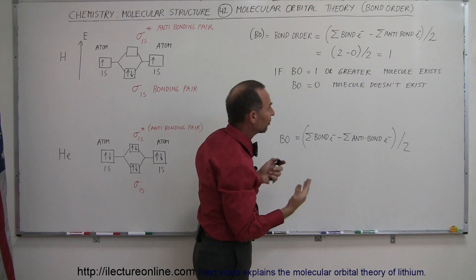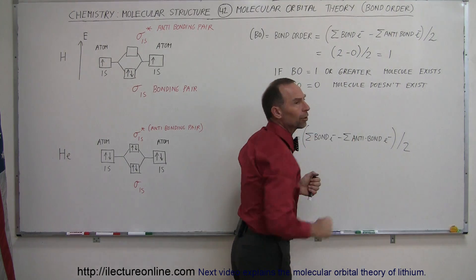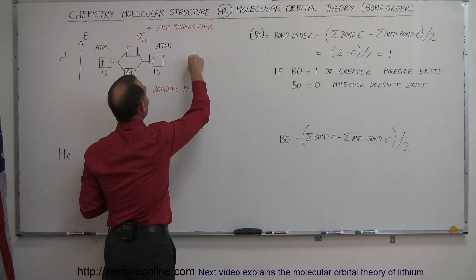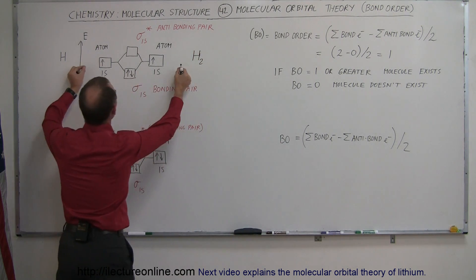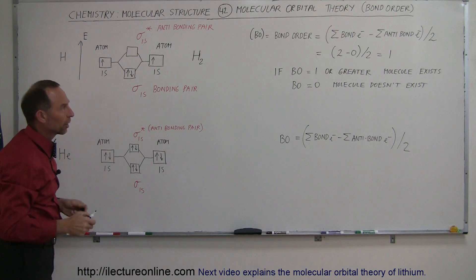The theory says that if the bond order is 1 or greater, a molecule like that can exist. And so indeed, you can make an H2 molecule, since there's only two electrons that will come together, form a sigma bond like that, and the molecule can exist.